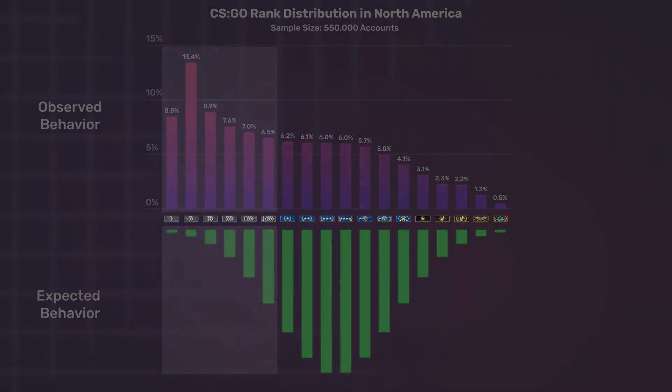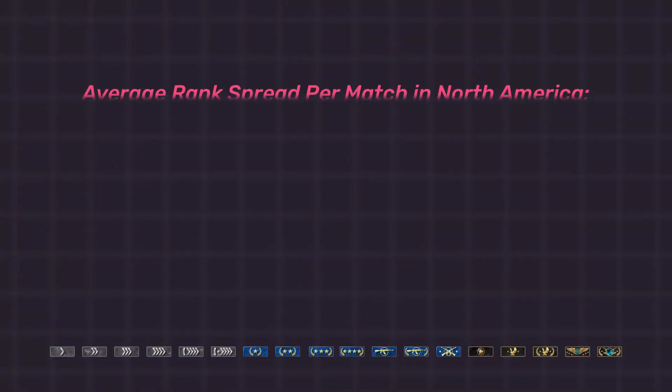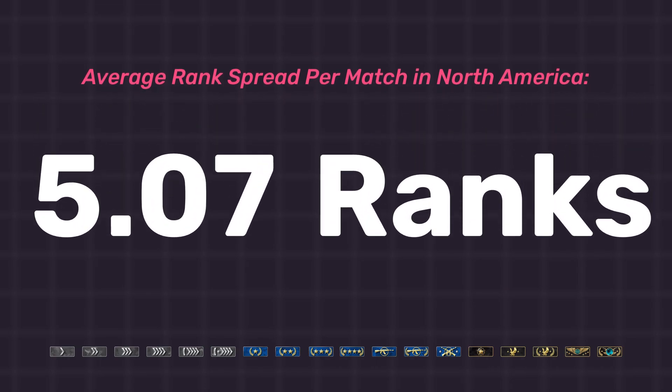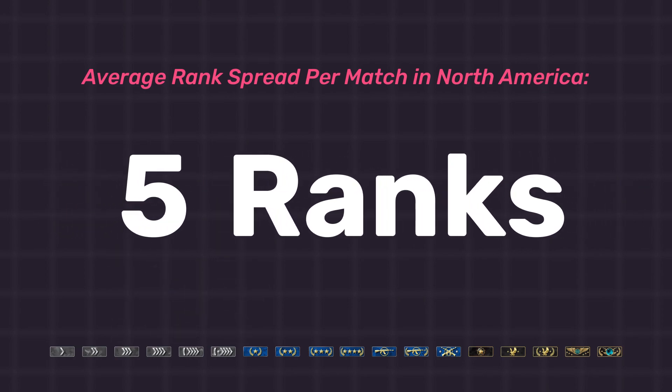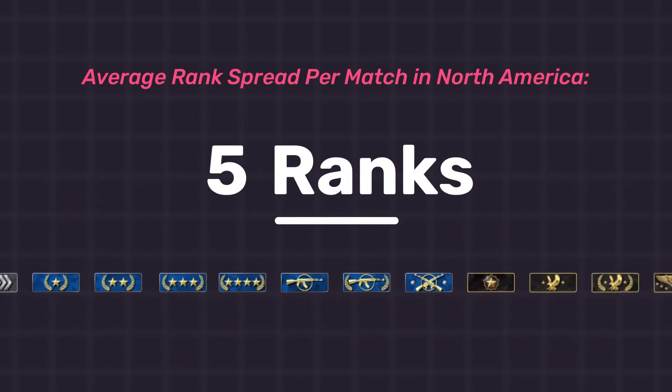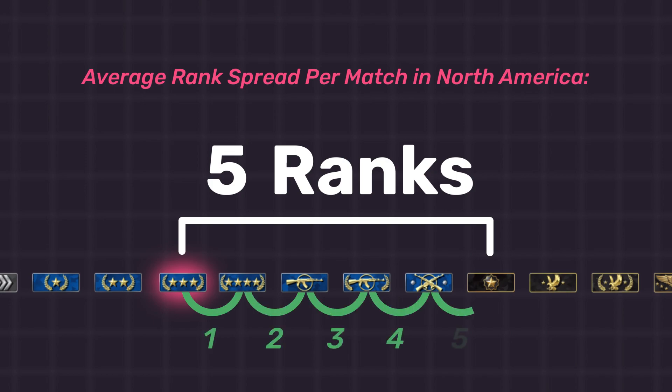Now, the players that are unusually far below average have to play against people that are much more highly skilled. In North America, the average difference between the top and bottom rank in a lobby is 5.07 ranks. For this example, let's round it to 5 ranks. This means that if the lowest rank in a lobby is Gold Nova 3, you would expect the highest rank in the lobby, on average, to be DMG.